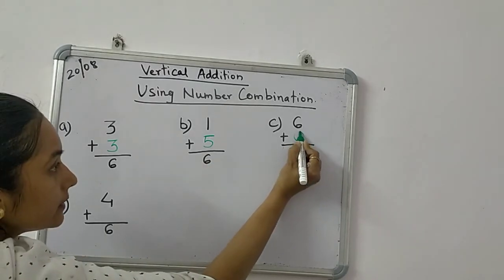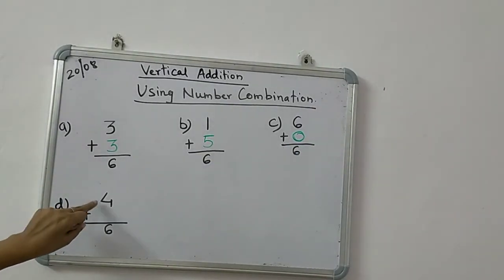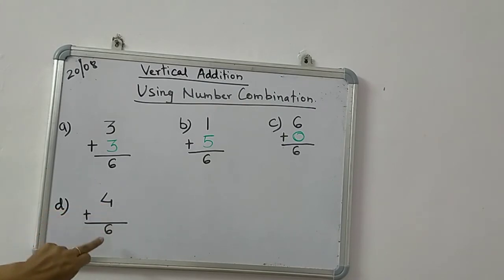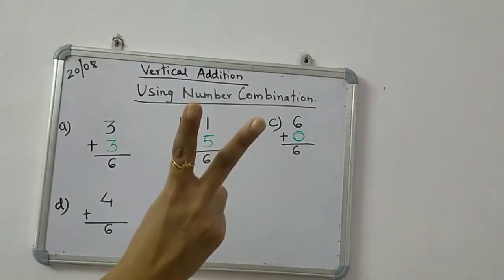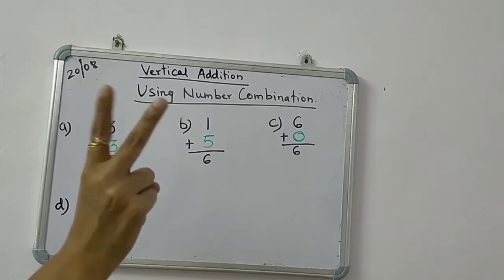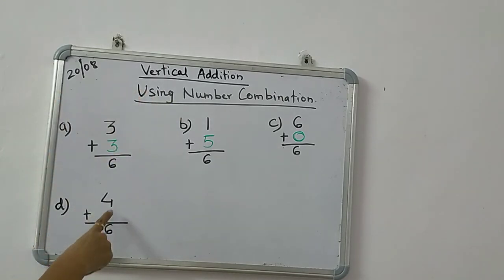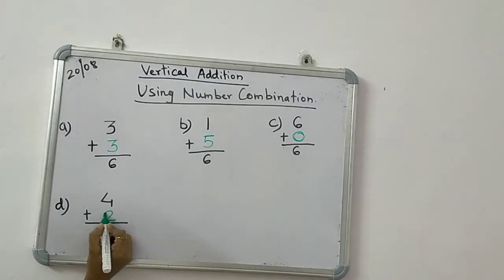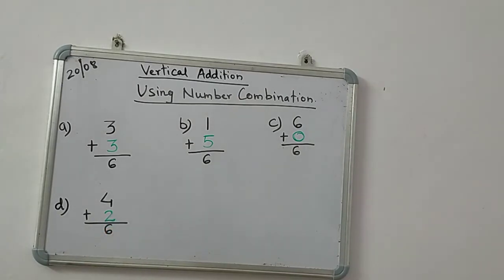Now 4 - 4 ke baad aapko 6 tak jana hai. 4 ke baad counting karo 6 tak: 5, 6. How many numbers more? We have to count only 2 more. So 4 plus 2 is equal to 6. This is the revision of number combinations.